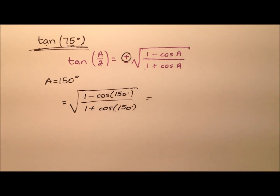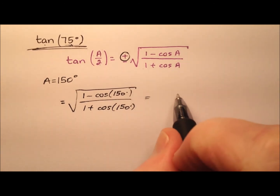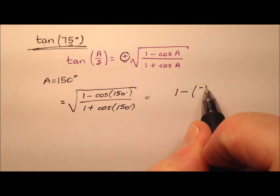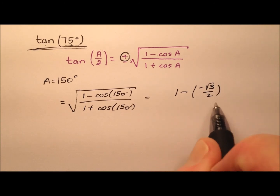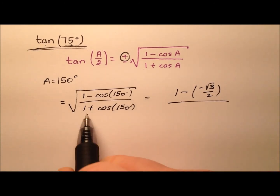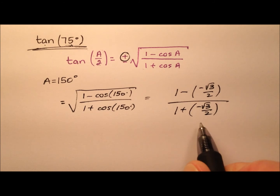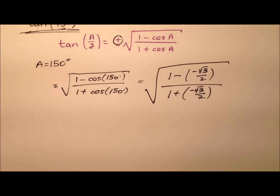The cosine of 150 degrees is negative square root of 3 over 2. So I'll have 1 minus negative square root of 3 over 2, all over 1 plus negative radical 3 over 2 — and all of that is under a radical.